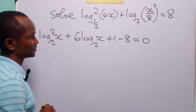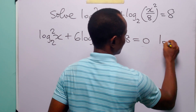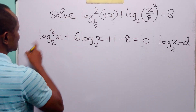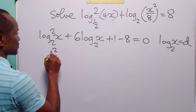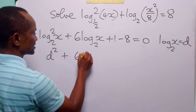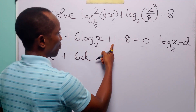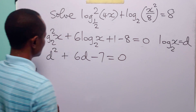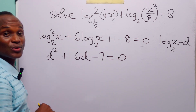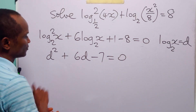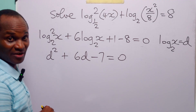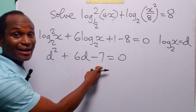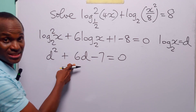At this point, let us do a substitution. Let log to base 2 of x be equal to d. So here we have d squared plus 6d, and 1 minus 8 is minus 7, giving us d squared plus 6d minus 7 equals 0. You can see that we have a quadratic equation in d, and we can solve this by factorization. All we have to do is find the factors of minus 7 that add up to plus 6.